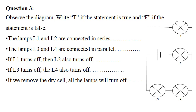Question three: observe the diagram and write T if the statement is true and F if false. Statement one — lamps L1 and L2 are connected in series. This is false, since L1 and L2 are connected in parallel; at the site of L2 there is branching, which indicates a parallel connection.